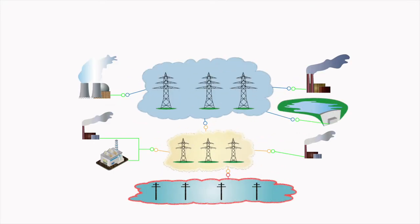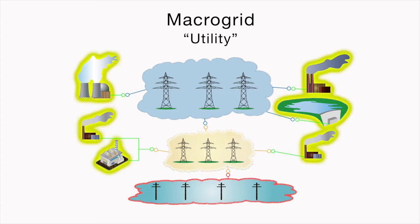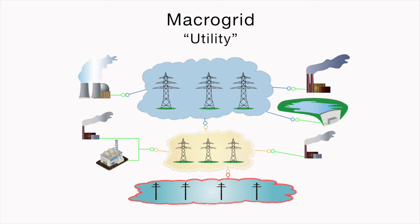Most users today get their power from the macrogrid, commonly referred to as the utility. The macrogrid receives its AC power input from large, decentralized power stations.